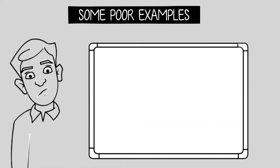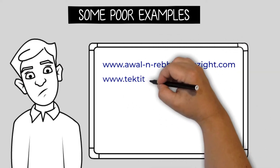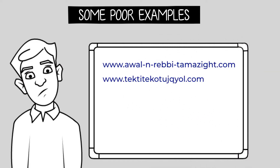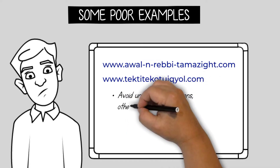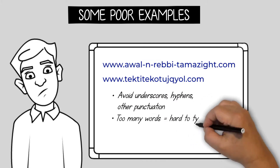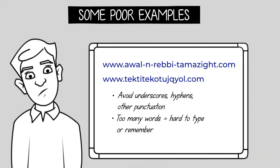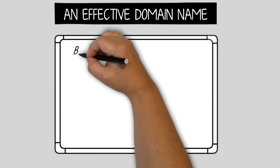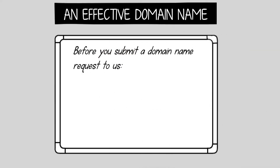Here are some poor examples. Try to avoid using underscores, hyphens, or any other punctuation in your domain name. Too many words will make it complicated to type or remember. Before you submit a domain name request to us, get opinions from other people. This can include people you report to.